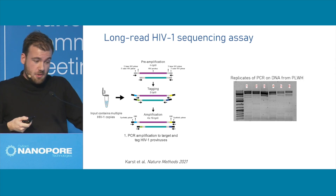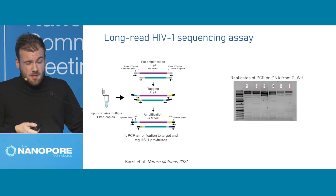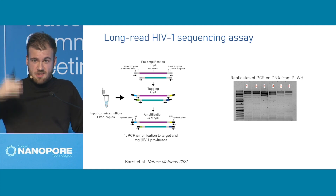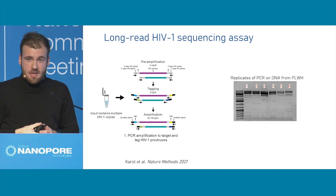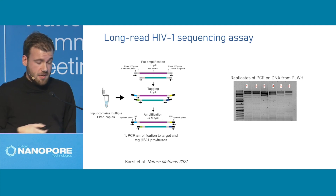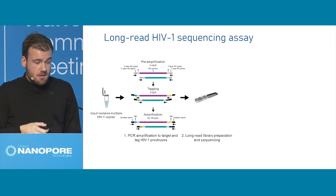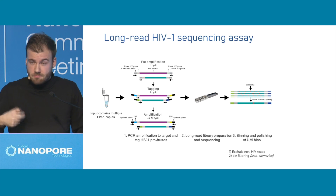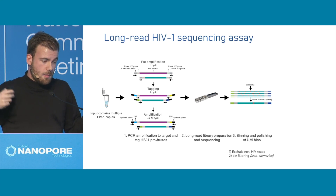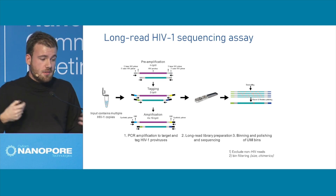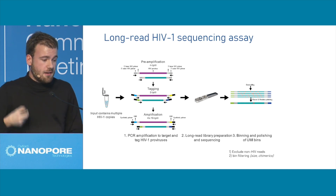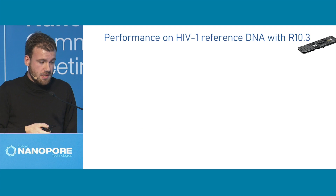Based on this approach, what you can see here is DNA — six replicates from the same patient. You can see those nice smears, those ladder-like patterns, which are actually different HIV amplicons. We then take those amplicons, put them on the flow cell on nanopore, and get our long-read data. Then we have a computational pipeline that allows us to detect the UMIs, bin the reads together, and polish our reads.